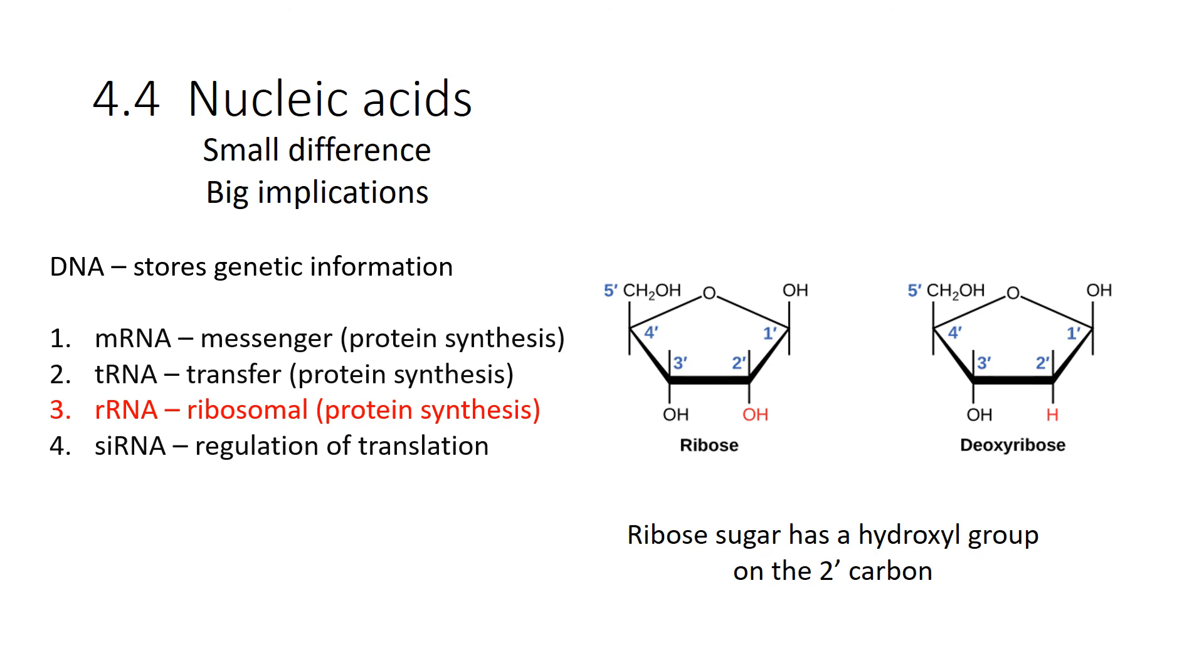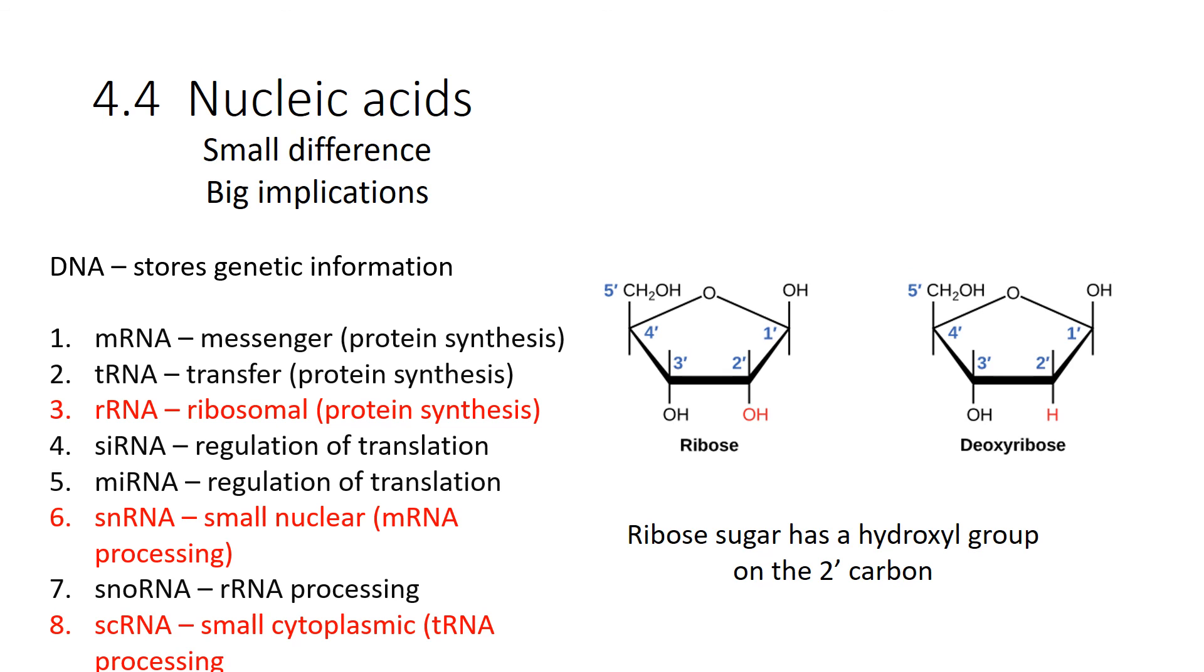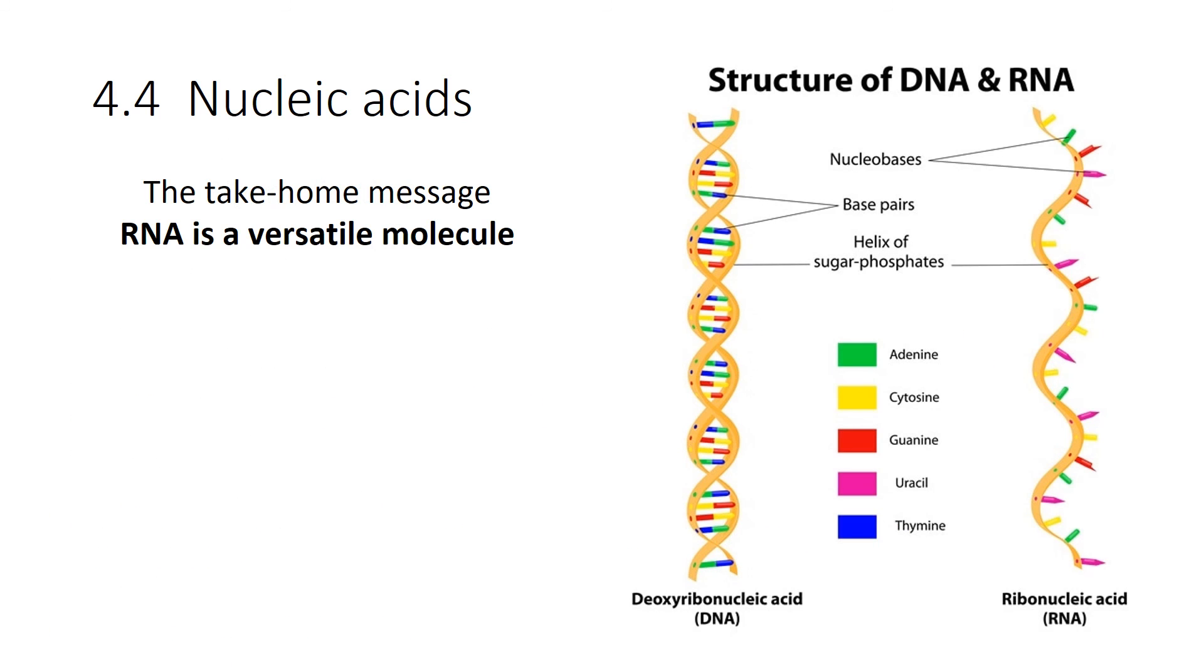There's siRNA for regulation of translation. MicroRNA is involved in regulation of translation as well. There's small nuclear RNA for RNA processing. There's snoRNA for ribosomal processing. And there's small cytoplasmic for tRNA processing. So the take-home message with all of those different types of RNAs is that it is incredibly versatile. And it's very much involved with making proteins and regulating gene expression.